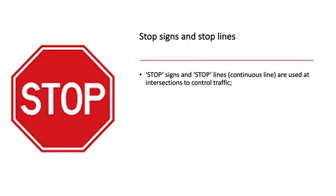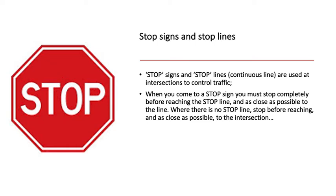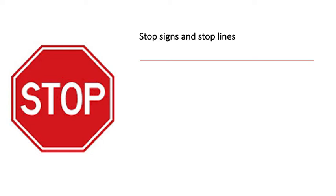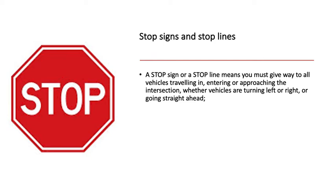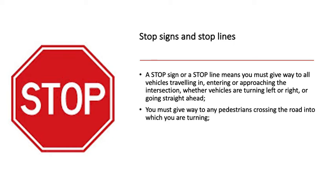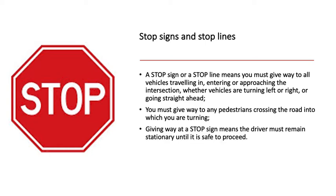Stop signs and stop lines. Stop signs and stop lines — continuous line — are used at intersections to control traffic. When you come to a stop sign you must stop completely before reaching the stop line and as close as possible to the line. Where there is no stop line, stop before reaching and as close as possible to the intersection. A stop sign or stop line means you must give way to all vehicles travelling in, entering or approaching the intersection, whether they are turning left, turning right, or going straight ahead. You must also give way to any pedestrians crossing the road into which you are turning. Giving way at a stop sign means the driver must remain stationary until it is safe to proceed.